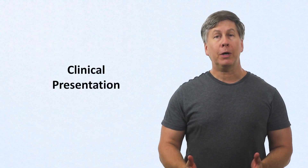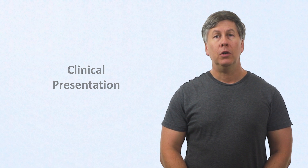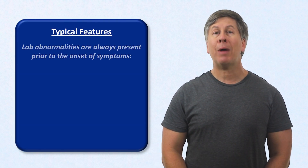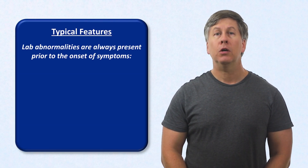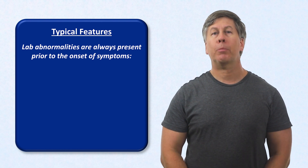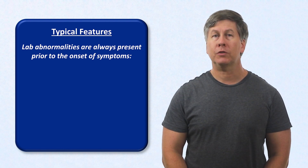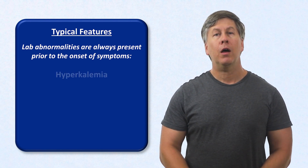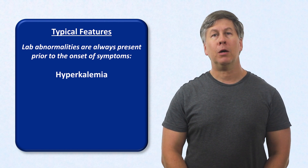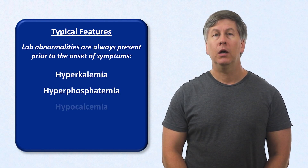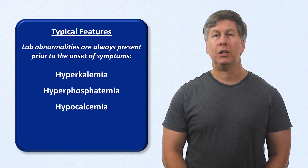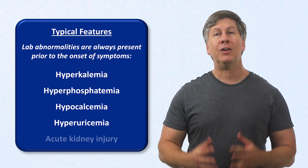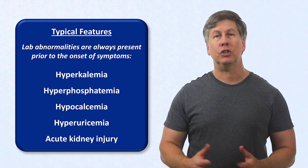Regarding the clinical presentation, what are the typical features? Lab abnormalities are always present prior to the onset of symptoms. These abnormalities include hyperkalemia, hyperphosphatemia, hypocalcemia, hyperuricemia, and acute kidney injury.